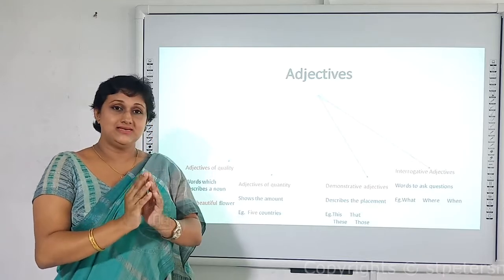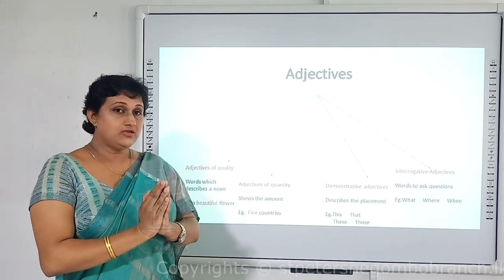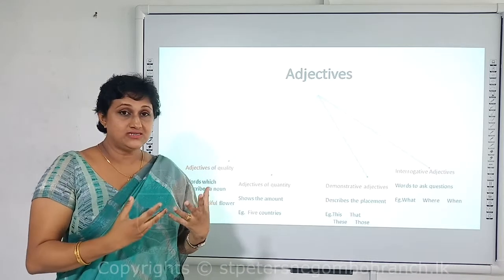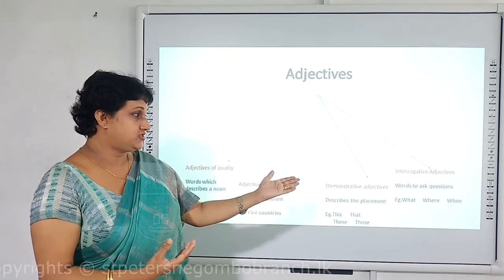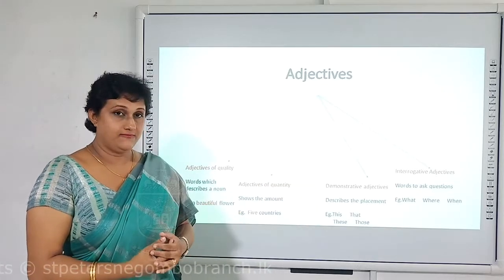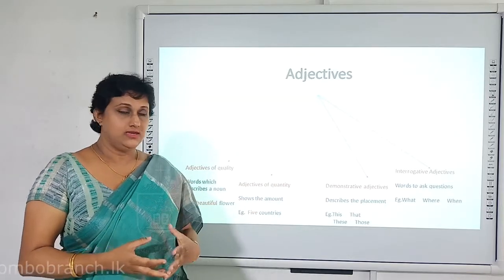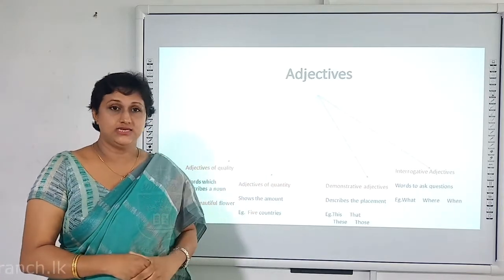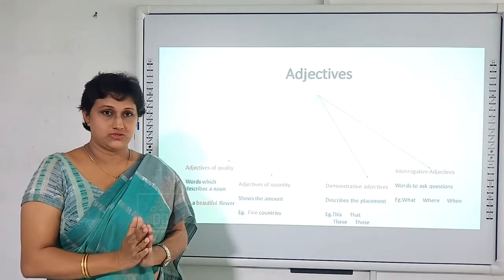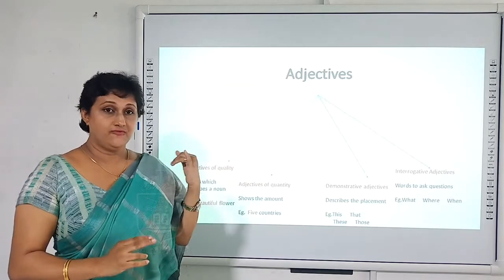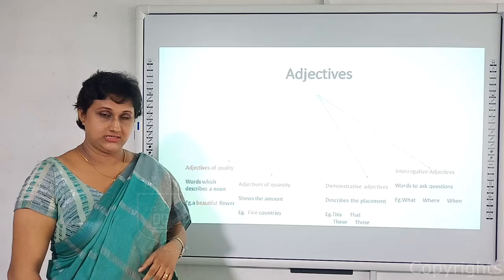The last type of adjective is interrogative adjectives — words used to ask questions, such as which, where, and when. These are the WH question words. So those are the four types of adjectives: adjectives of quality, quantity, demonstrative, and interrogative adjectives.